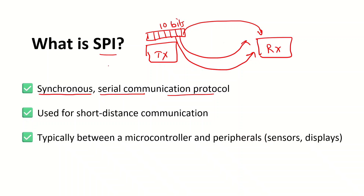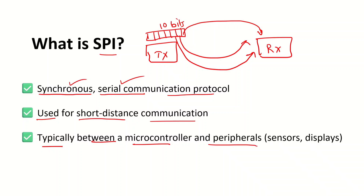SPI is a synchronous as well as serial communication protocol. It is mostly used for short distance communication. Short distance means onboard communication — all the peripherals and processors are close together, so the distance between every peripheral is shorter. SPI is typically used between a microcontroller and peripherals such as sensors and displays.